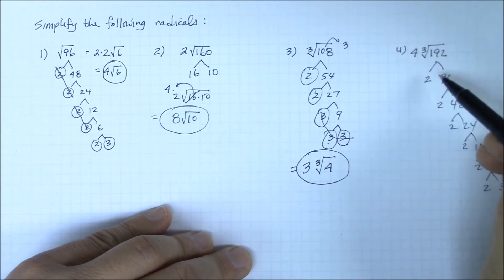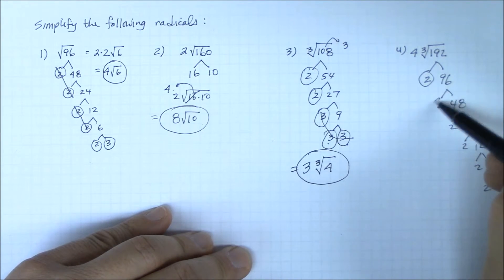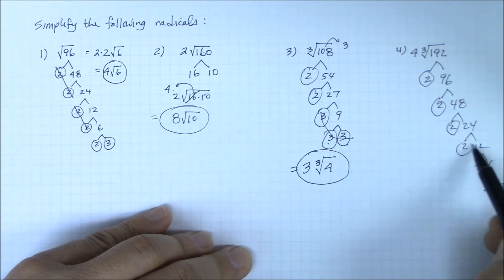I realized to get 192, I had to multiply six 2s and a 3.